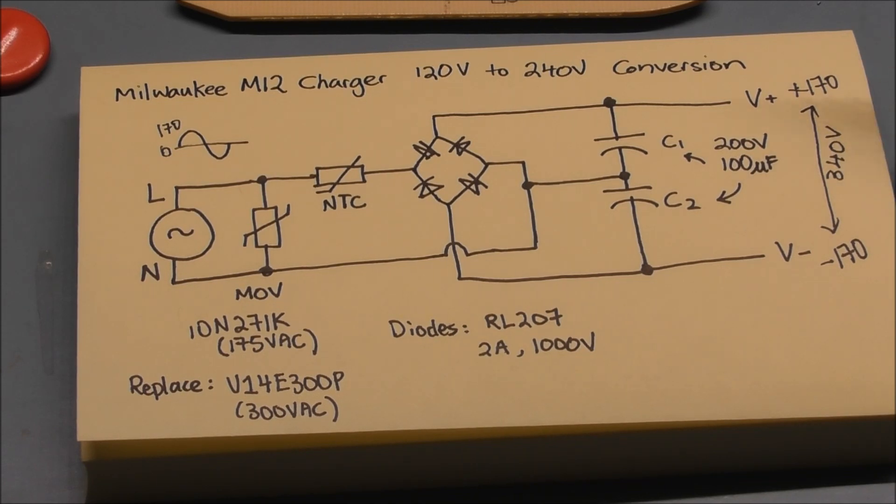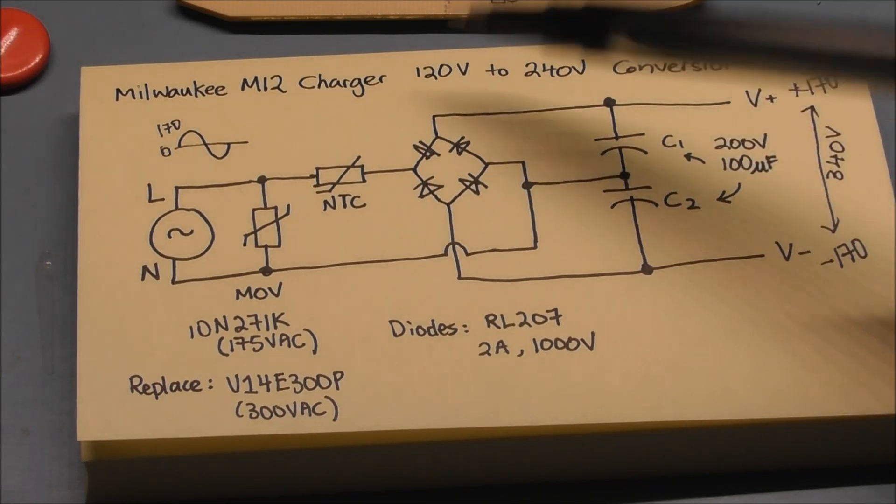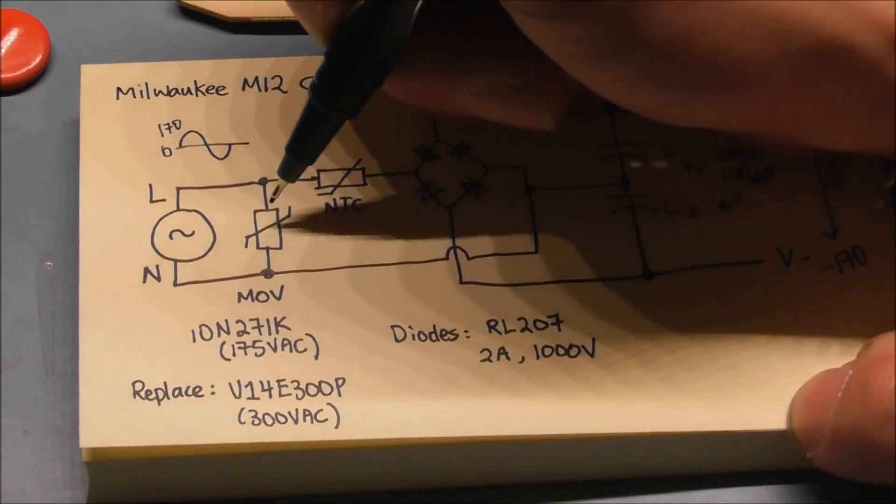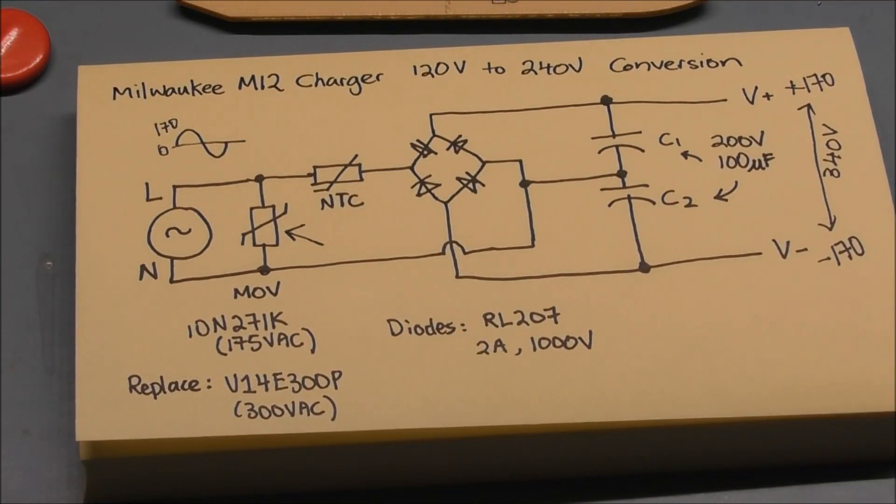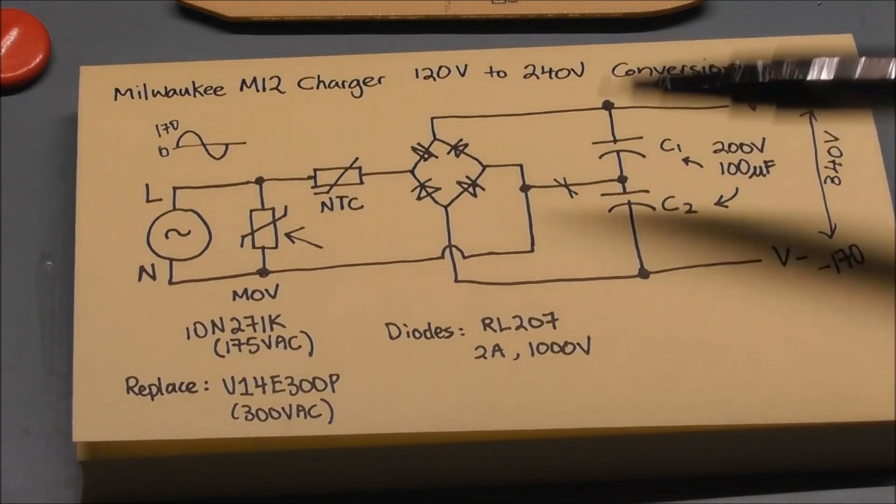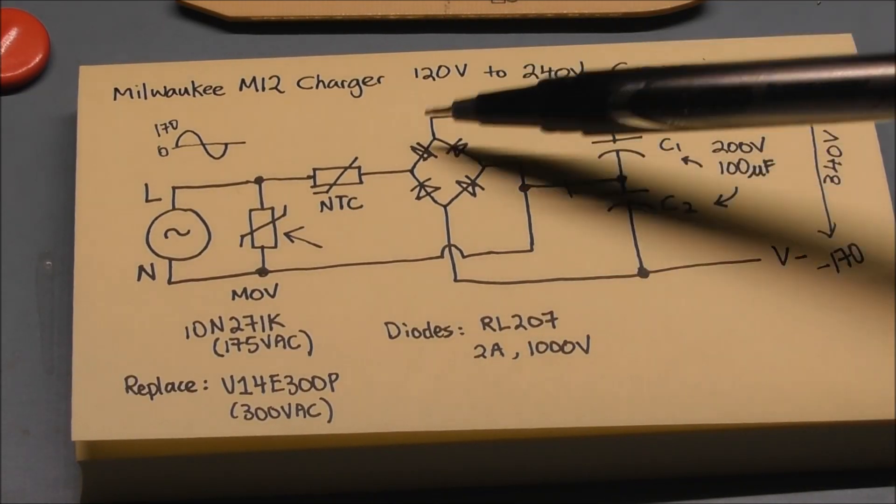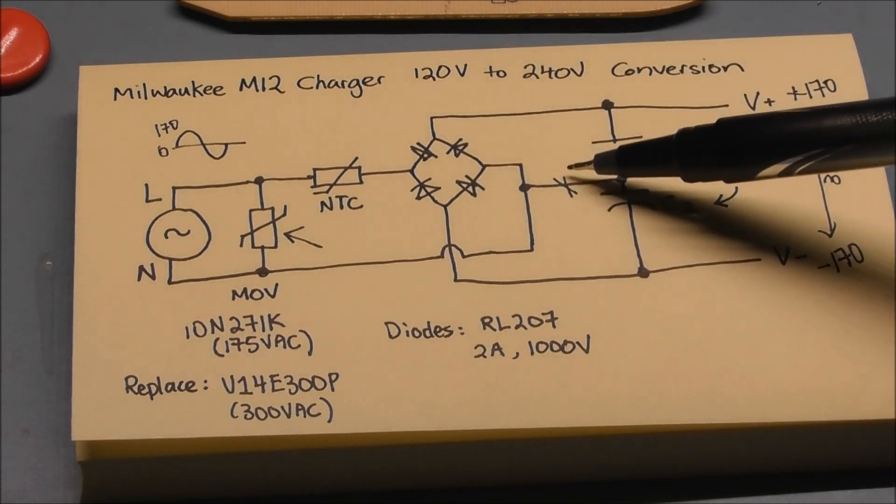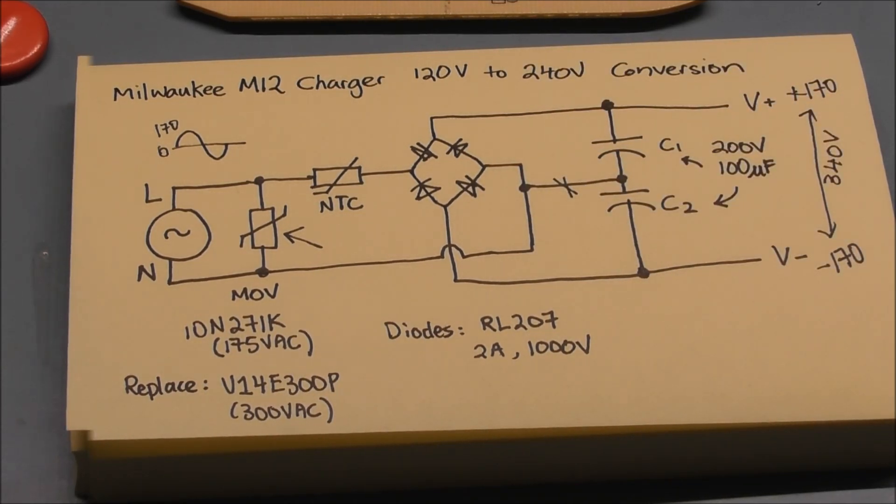So this is interesting because what we want is we want this system to run on 240 volts instead of 120 volts AC. So here's what we're going to do: The first thing is to change this MOV into something that can handle the higher voltage, and what we'll do is we will cut this trace over here. Essentially what we will have is simply a bridge rectifier that's full wave rectified, and we should also get 340 volts on the output because once we cut this line it's no longer in voltage doubler mode.